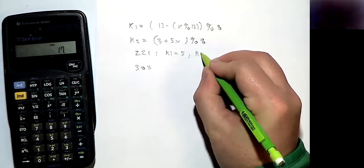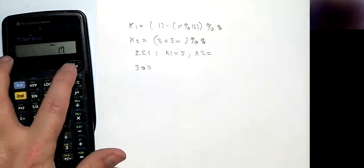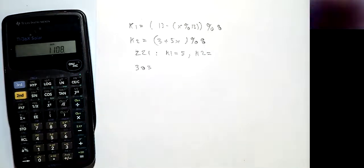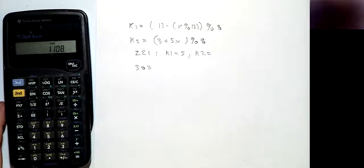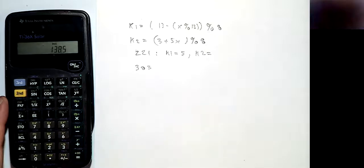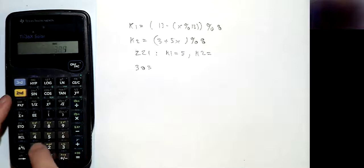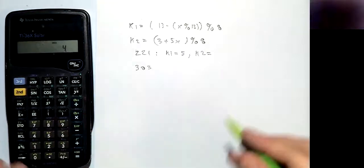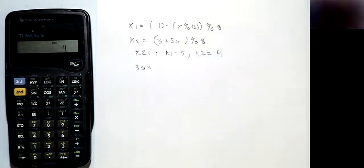For k2, we have 3 plus 5x, so we're going to have 221 times 5 plus 3. So that's 1108. And then what we're going to do is we're going to divide by 8, and now we have 138.5. So you subtract what's in front, and then multiply by 8, and that gives you the remainder, which is 4.